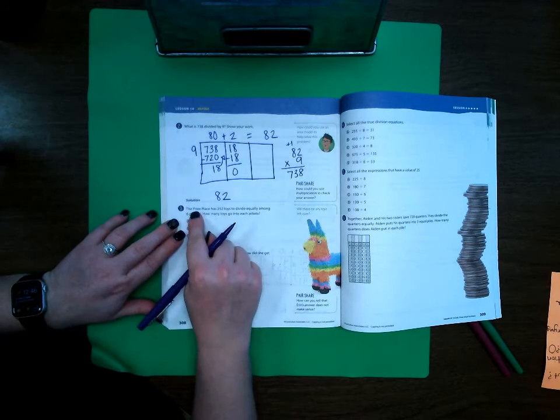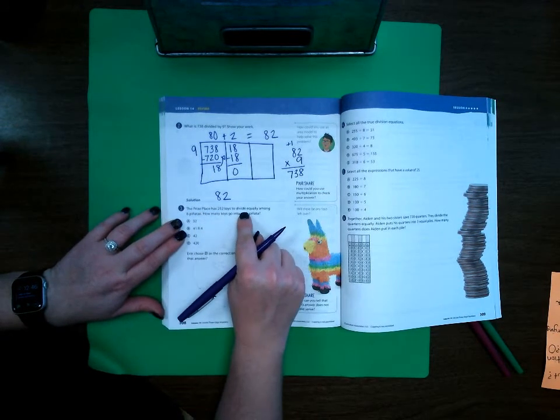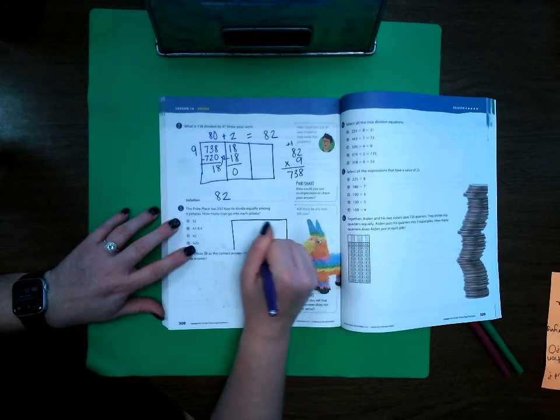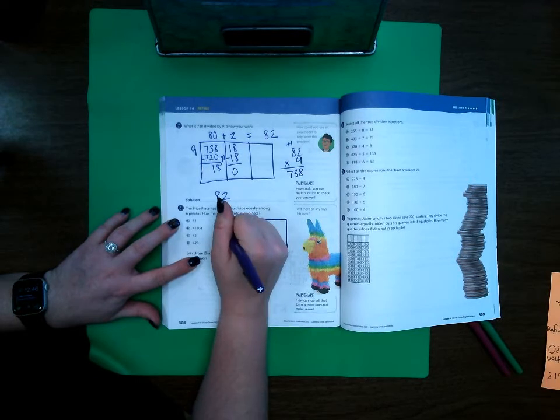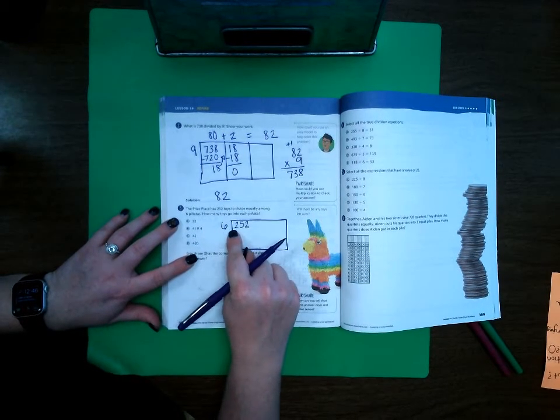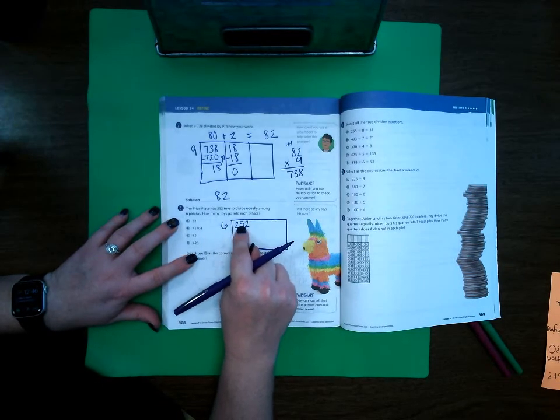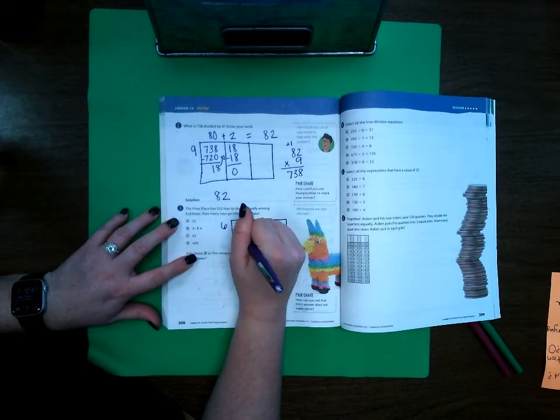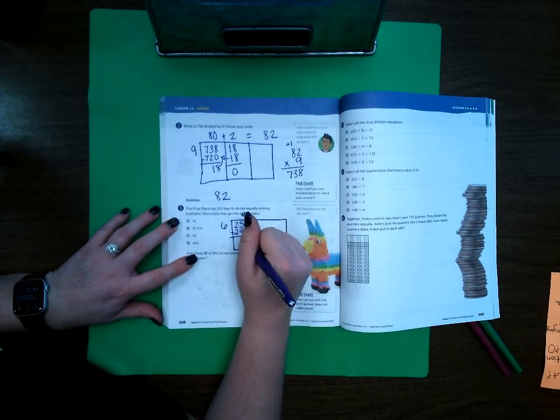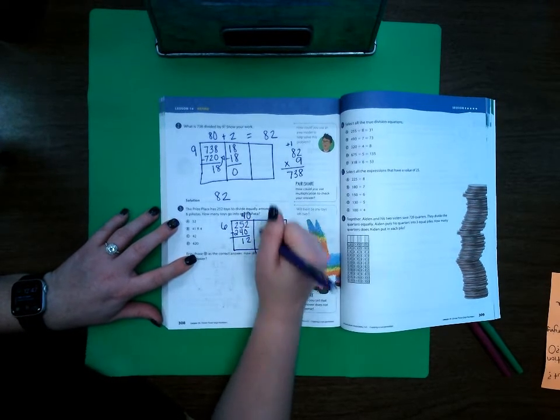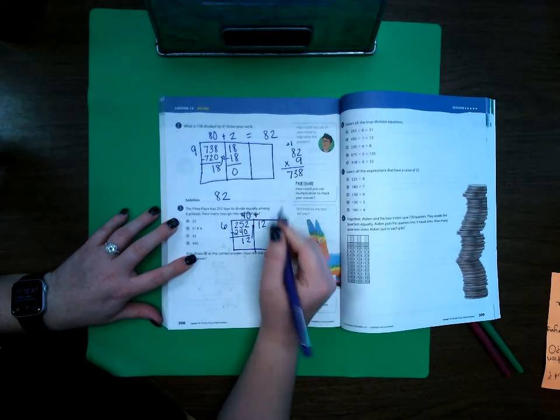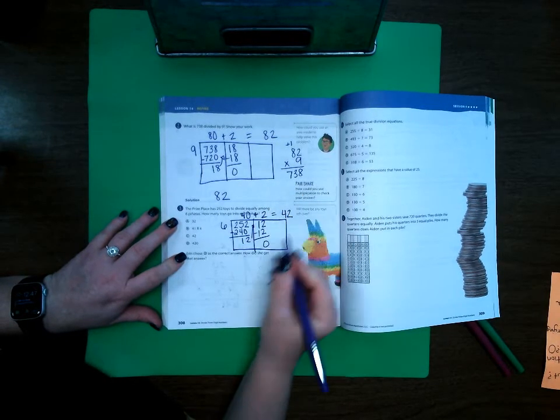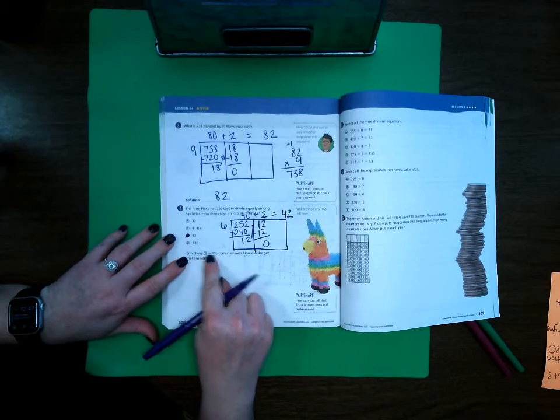Number 3, the prize palace has 252 toys to divide equally among 6 piñatas. How many toys go in each piñata? Go ahead and make my area model. 252 divided by 6. Well I can't put 6 into 2 but I can put 6 into 25. I can do 4, 6 times 4 is 24, but I need a 0 on there so 240. I'm going to subtract that, 2 minus 0 is 2, 5 minus 4 is 1. I'm going to bring that 12 up here and I easily know that 6 times 2 is 12 which leaves me nothing and gives me an answer of 42.